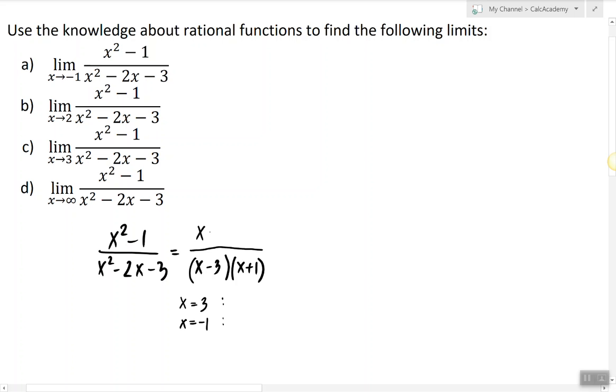To simplify, we factor the numerator and see that (x+1) is shared between numerator and denominator, so we can reduce. At x=3 we have an asymptotic discontinuity, so a vertical asymptote. At x=-1 we have a removable discontinuity.